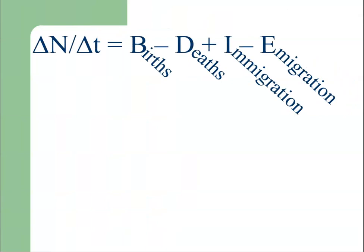Let us think of change in the size of the population. In this equation, N stands for the size of the population, delta shows change, and small t shows one unit of time. Delta N divided by delta t means change in the size of the population per one time period, and that equals birth rates minus death rates plus immigration minus emigration — this determines the size of the population.